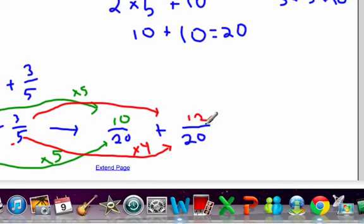And now you can add up the numerators. So ten plus twelve equals twenty-two. And the denominator will stay the same. That remains twenty. And so we get twenty-two-twentieths.